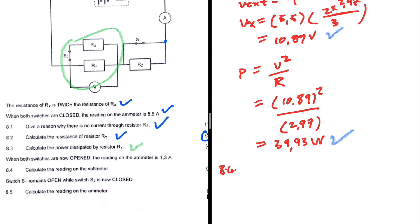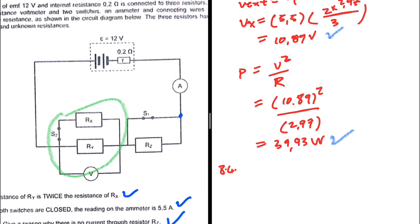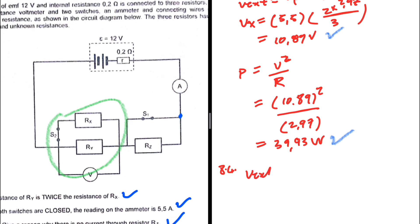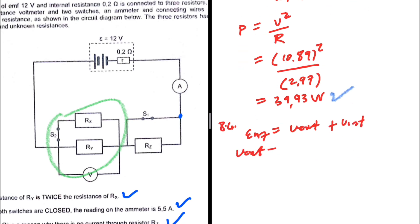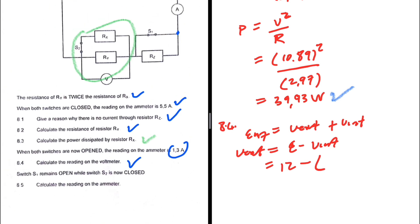For question 8.4, calculate the reading on the voltmeter. When both switches are now open, the reading on the ammeter is 1.3 amperes. The voltmeter is connected across the ends of the battery, so it reads V external. We use: EMF equals V external plus V internal, so V external equals EMF minus V internal. With EMF of 12 volts and V internal equals 1.3 times 0.2, we get: 12 minus 0.26 equals 11.74 volts.